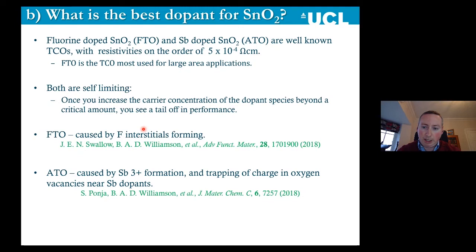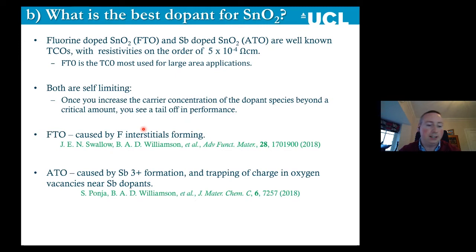We showed that for fluorine-doped tin dioxide, this tail-off is caused by the formation of fluorine interstitials. As you dope, normally fluorine goes on the oxygen site — a one-electron donor — increasing conductivity. But once you exceed a critical concentration, you start to form fluorine interstitials which end up trapping charge and killing the conductivity. Similarly, for antimony doping of tin dioxide, you get antimony 3+ formation at the surfaces, and if you have antimony dopants near oxygen vacancies, you get charge trapping as well. So as you increase the carrier concentration, you eventually get a tail-off there as well.